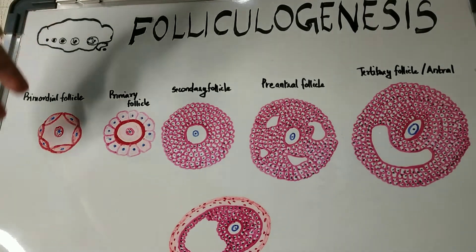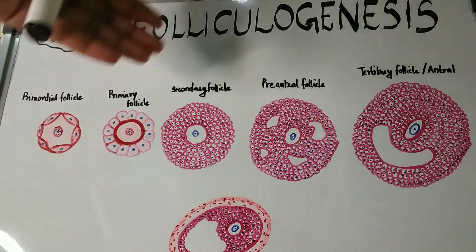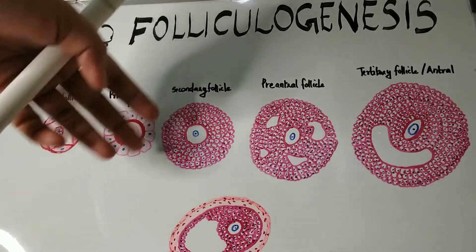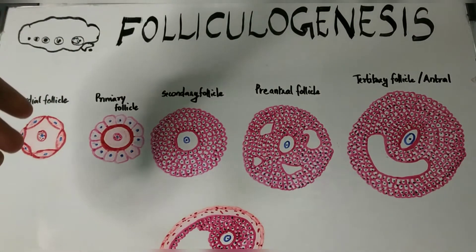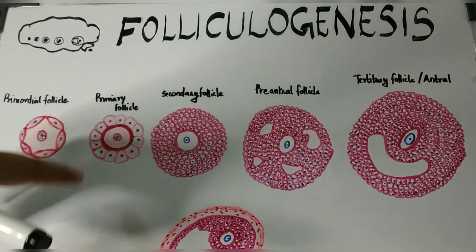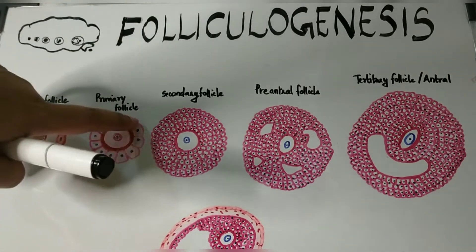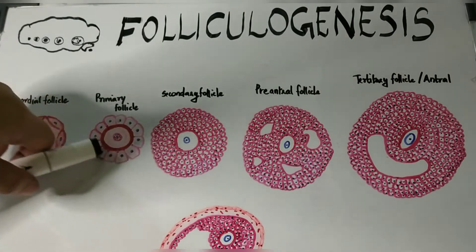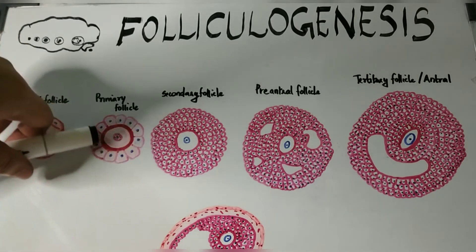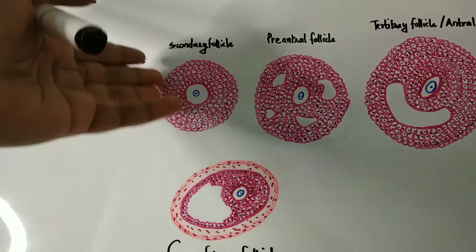During each reproductive cycle, 10 to 15 primordial follicles start to mature, resulting in the formation of primary, secondary, preantral, tertiary, and Graafian follicles. In a primary follicle, the primary oocyte is covered by a layer of columnar or cuboidal cells. A layer of glycoprotein forms between the follicle cells and the primary oocyte, called the zona pellucida. The cells covering the primary oocyte are also called granulosa cells.